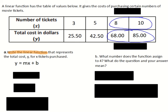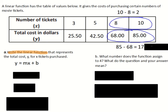We're going to use 8 tickets cost $68, and 10 tickets cost $85. We're going to take the x values and subtract them. 10 minus 8 is 2, so our change in x is 2 for this pair of points. Now I'm going to subtract the y values: 85 minus 68 is 17. So my change in y is 17, my change in x is 2.